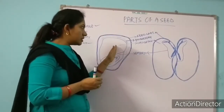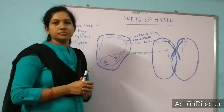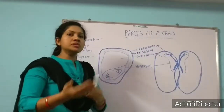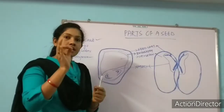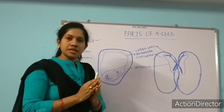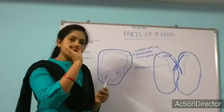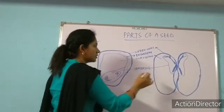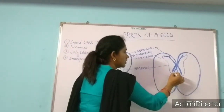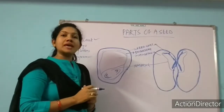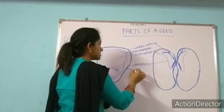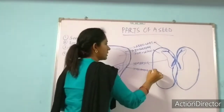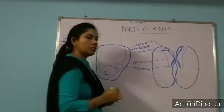Now, when talking about seed coat, one more thing to note: in the outer layer of the seed, there is a small hole or pore. That small pore we call micropyle. A micropyle pore can be observed on the seed coat.